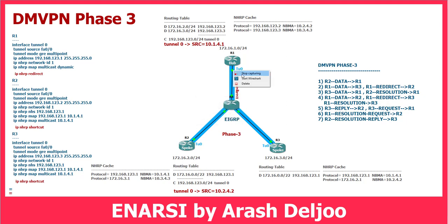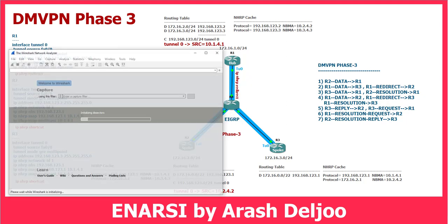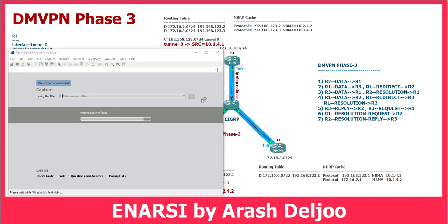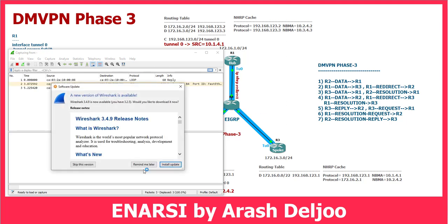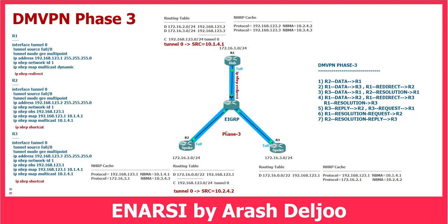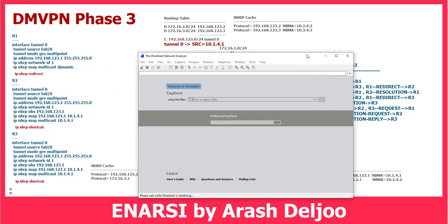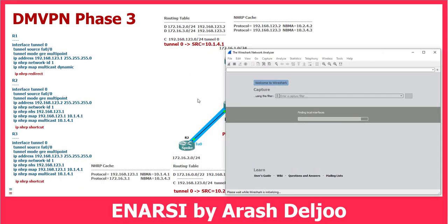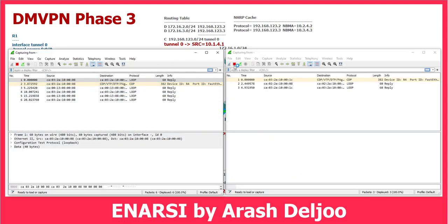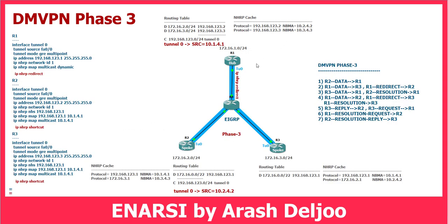We don't have any tunnel interface now. If you want, you can first monitor the link between Router 1 and Router 4 — this is our first capture. It is also recommended to capture one of the other links. For example, we can capture the link between Router 4 and Router 3, and also the link between Router 1 and Router 4. Now we should start the capture.